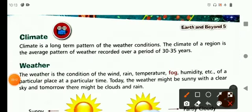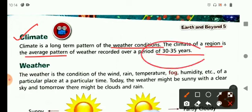First of all, we will read about climate. Climate is a long-term pattern of weather conditions, means weather conditions that prevail for a longer period of time in a particular region. The climate of a region is the average pattern of weather recorded over a period of 30 to 35 years.